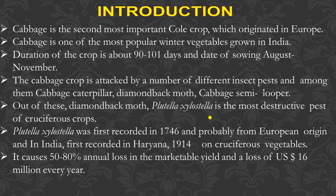Cabbage crop is attacked by a number of insect pests. Among them, cabbage caterpillar, diamondback moth, and cabbage semi-looper are the major pests. Diamondback moth, Plutella xylostella, is the most destructive pest of cruciferous crops. It was first recorded in 1746, probably of European origin, and in India first recorded in Haryana in 1914. It causes 50 to 80% annual loss in marketable yield and a loss of about 16 million US dollars per year.